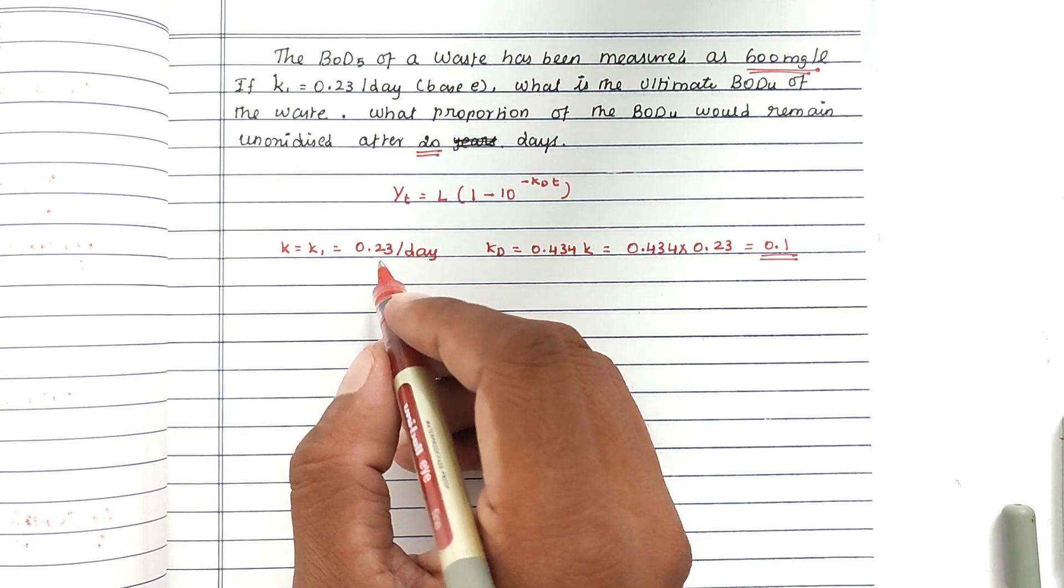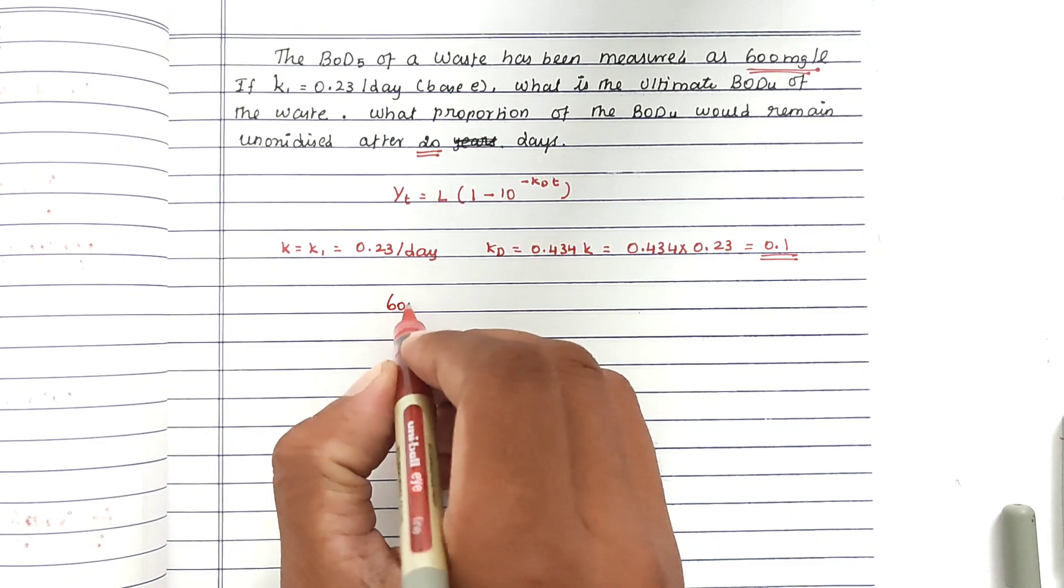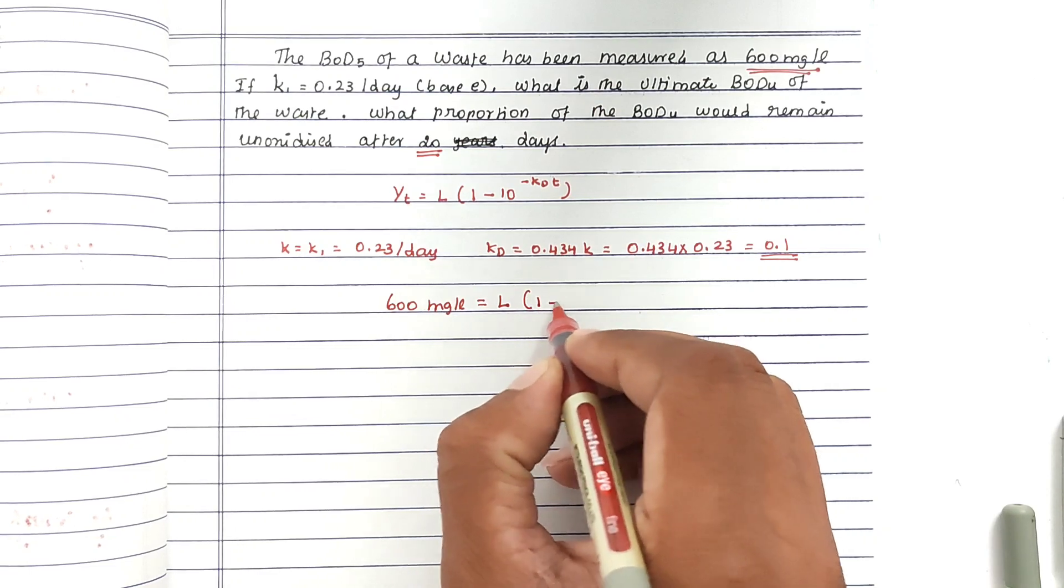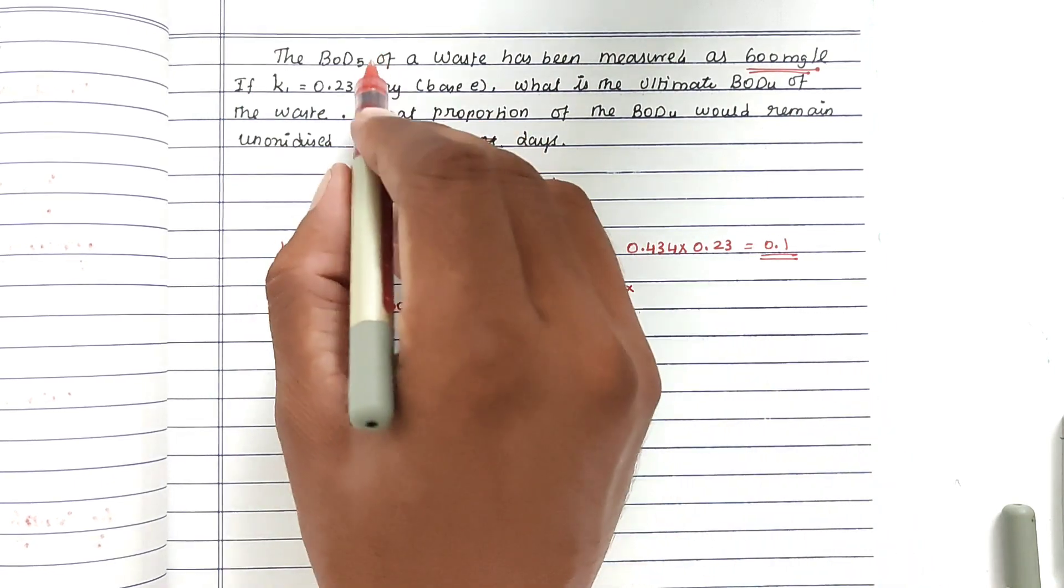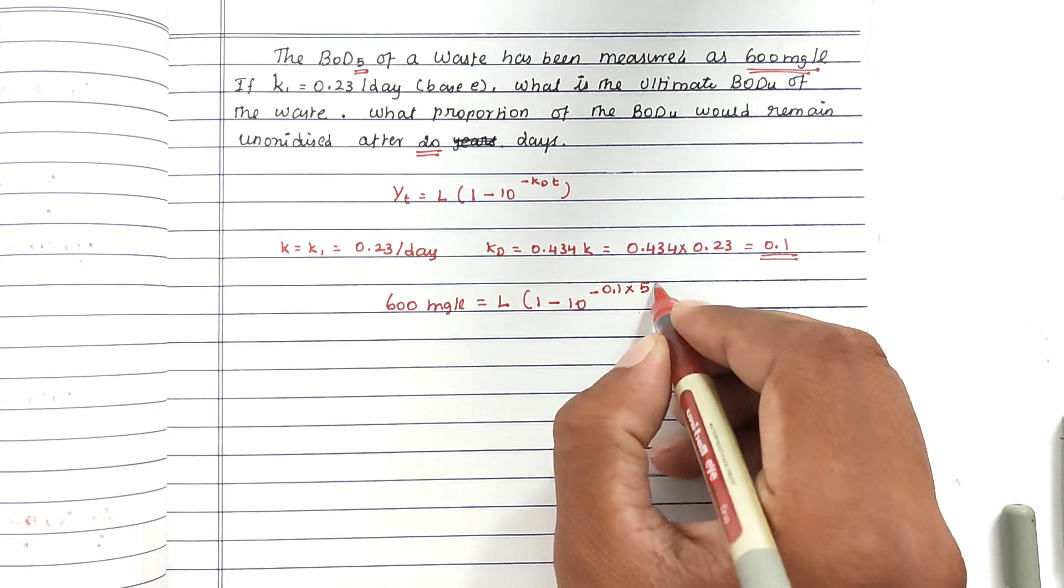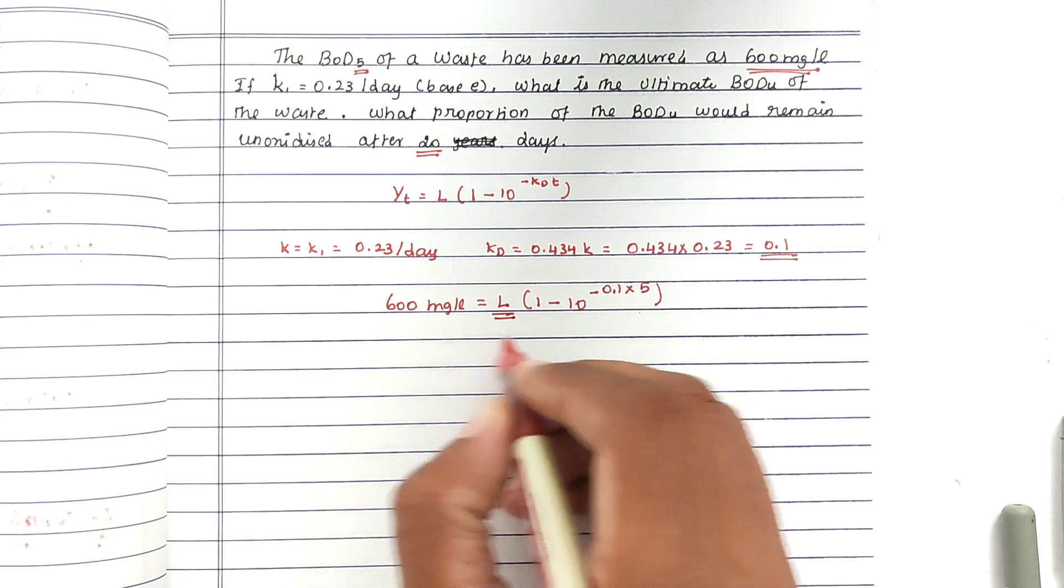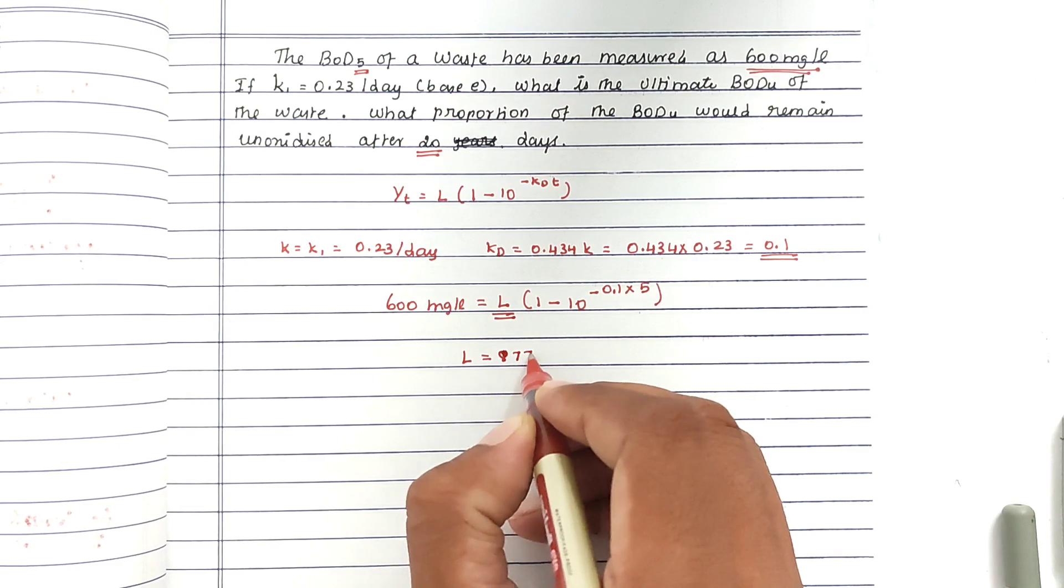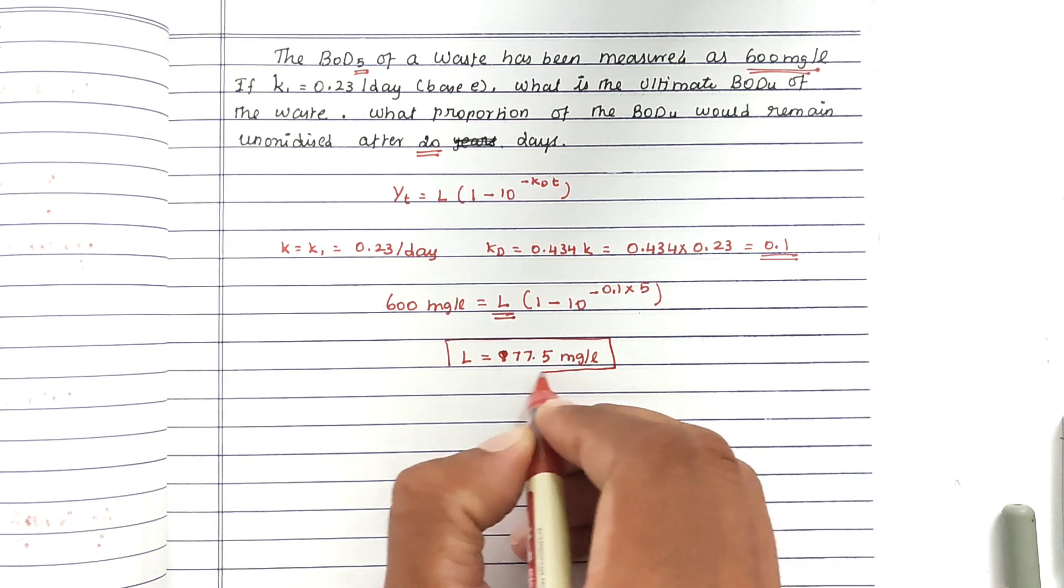Now we have to find out the L value. We can substitute all the values here. This is the ultimate BOD value. Solving this, we got L = 877.5 milligrams per liter. This is the ultimate BOD value.